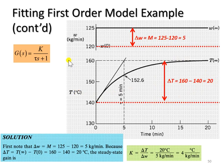So to calculate the gain, we have to divide change in output by change in input. So we have 20 divided by 5, which gives us 4 degrees Celsius per kilogram per minute as the process gain.